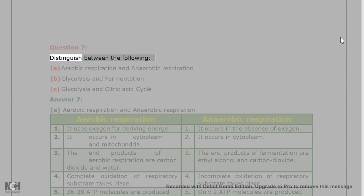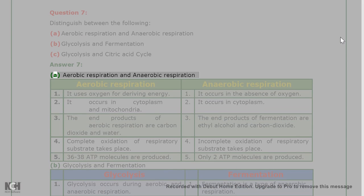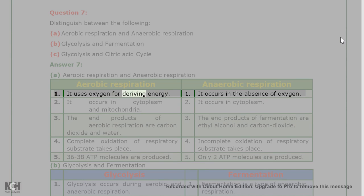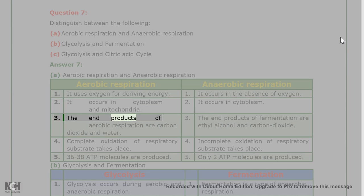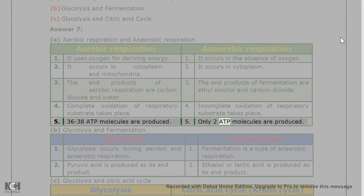Question 7: Distinguish between (a) aerobic and anaerobic respiration, (b) glycolysis and fermentation, (c) glycolysis and citric acid cycle. Answer 7(a): Aerobic respiration uses oxygen for deriving energy and occurs in cytoplasm and mitochondria; anaerobic respiration occurs in the absence of oxygen and only in the cytoplasm. End products of aerobic respiration are CO₂ and water; end products of fermentation are ethyl alcohol and CO₂. Aerobic respiration involves complete oxidation and produces 36–38 ATP; anaerobic respiration involves incomplete oxidation and produces only 2 ATP.